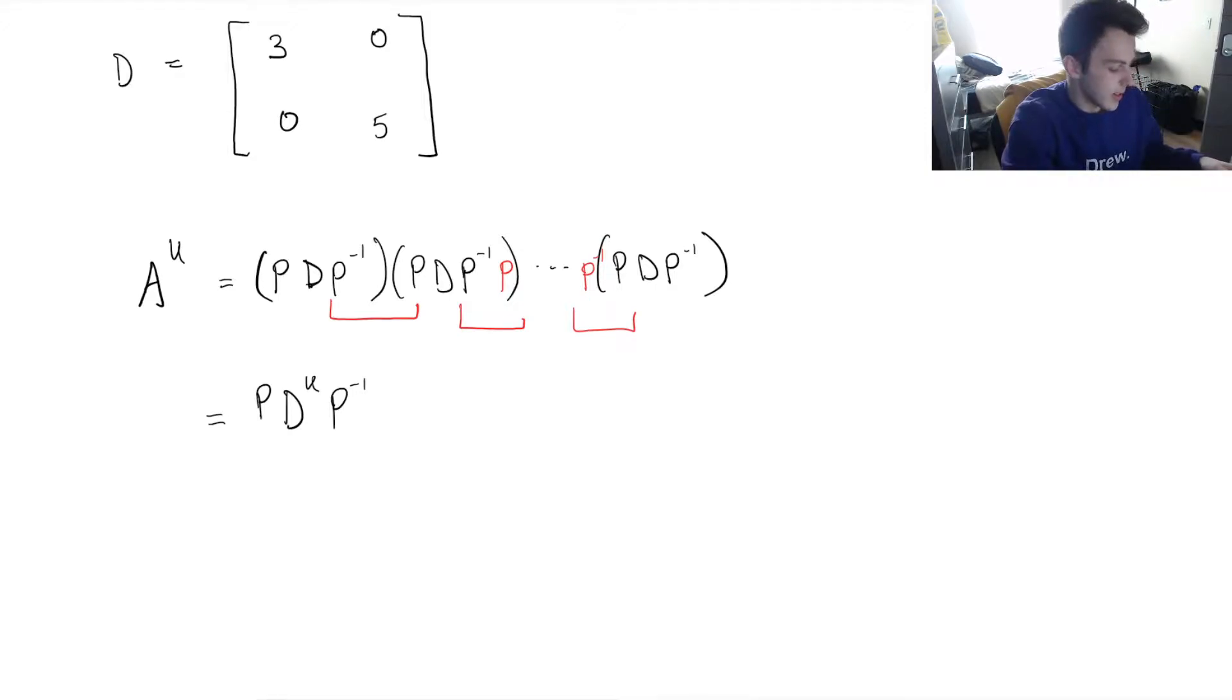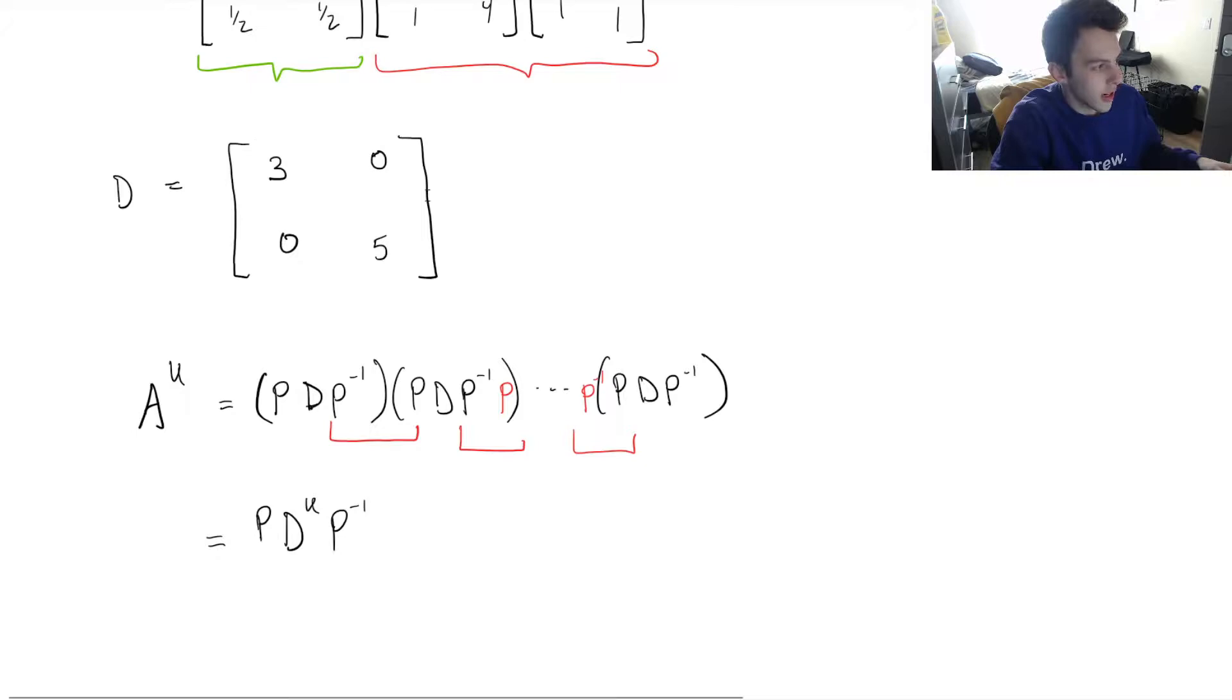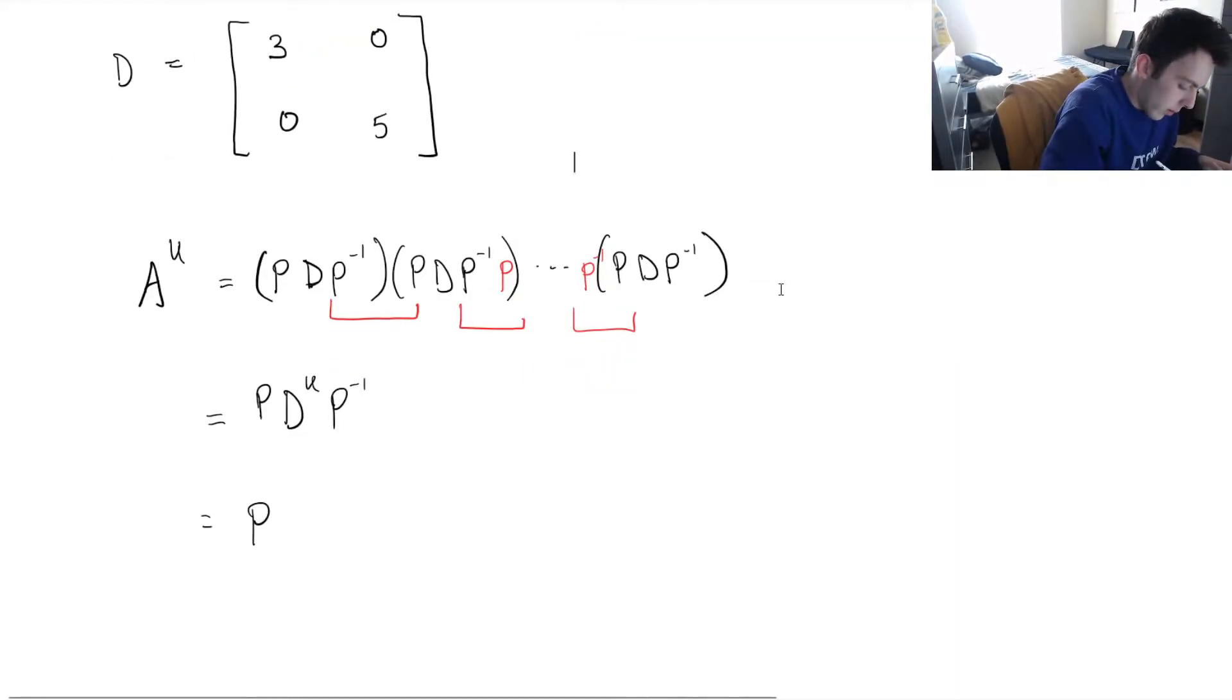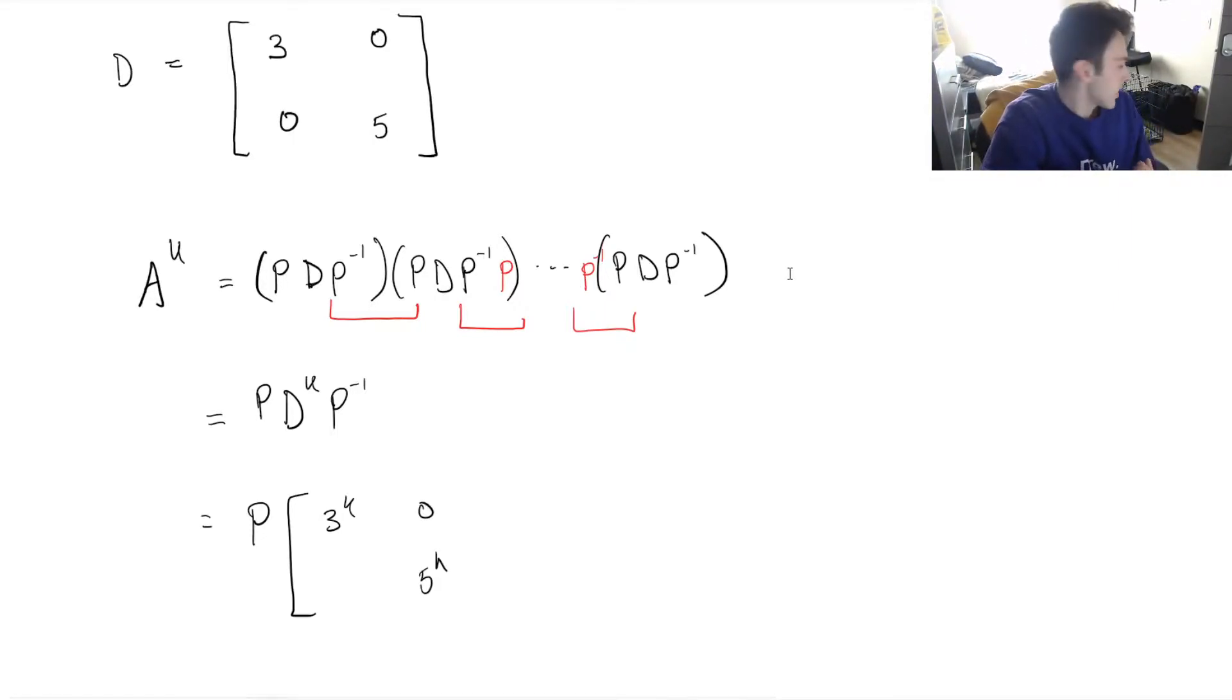So this is actually just going to result in P times D to the power of K times P inverse. And this is so great because D to the power of K, since we have only entries in our diagonal, it's super easy to calculate because all it is is just the diagonal entries to the power of K. So we can come up with an expression for all of our entries in terms of K, which is awesome. So it makes multiplying our matrices way easier. Like when K equals 100, instead of doing matrix multiplication 100 times, I can just find an expression by diagonalizing it and plugging in my value of K.